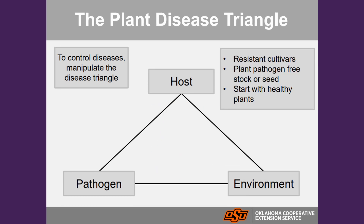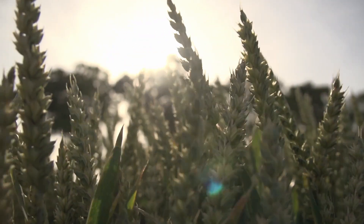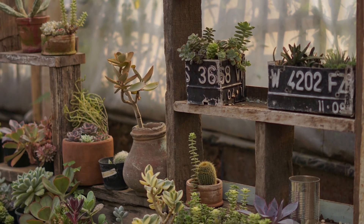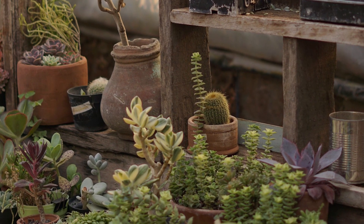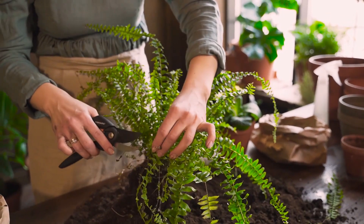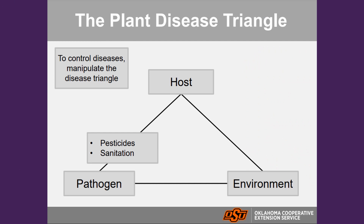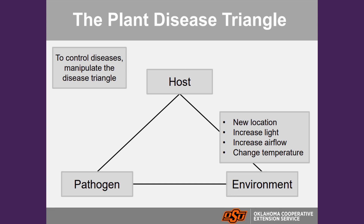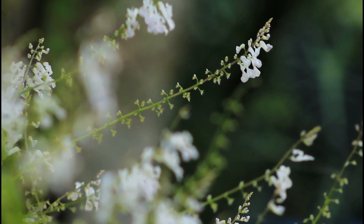Ways that we can control disease: if we have a host, make sure that host is not susceptible. Look for resistant varieties — things that might have some immunity to diseases present within the environment. When you go out to shop, make sure that plant doesn't have any disease on it and is already healthy, because plants don't necessarily get healthier once you bring them home. For controlling pathogens, we can do things like sanitation — removing that pathogen, making sure it doesn't get to our host. We can also use preventative fungicides to prevent infection. When it comes to manipulating the environment, you can prune your plants to make sure there's good airflow.